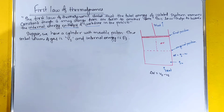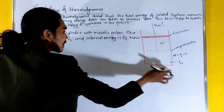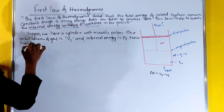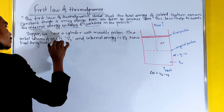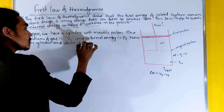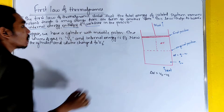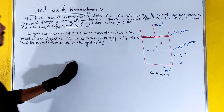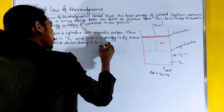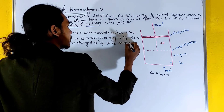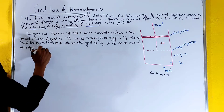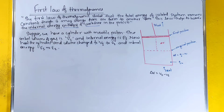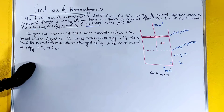Now we heat the cylinder. When the cylinder is heated, the volume changes from V1 to V2, and the internal energy changes from E1 to E2. According to the first law of thermodynamics, we can apply these changes.